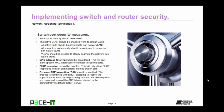A switch port security measure that should be considered is MAC address filtering. This will only allow specific MAC addresses to connect to specific ports. DHCP snooping should be enabled — this will only allow DHCP responses from an administrator-defined switch port, meaning that all DHCP responses will come from the same port. In addition to DHCP snooping, dynamic ARP inspection, or DAI, should also be enabled. This process is combined with DHCP snooping to restrict the opportunity for ARP cache poisoning to occur. All address resolution protocol requests are compared against the ARP table contained in the administratively defined DHCP server.